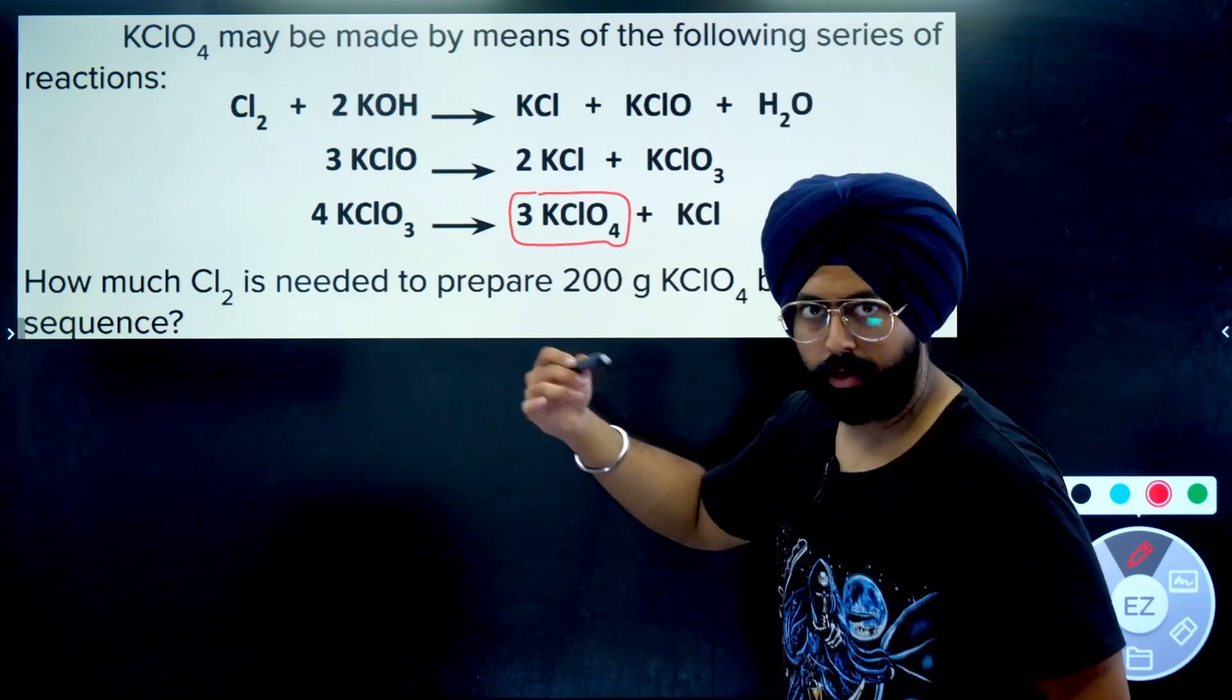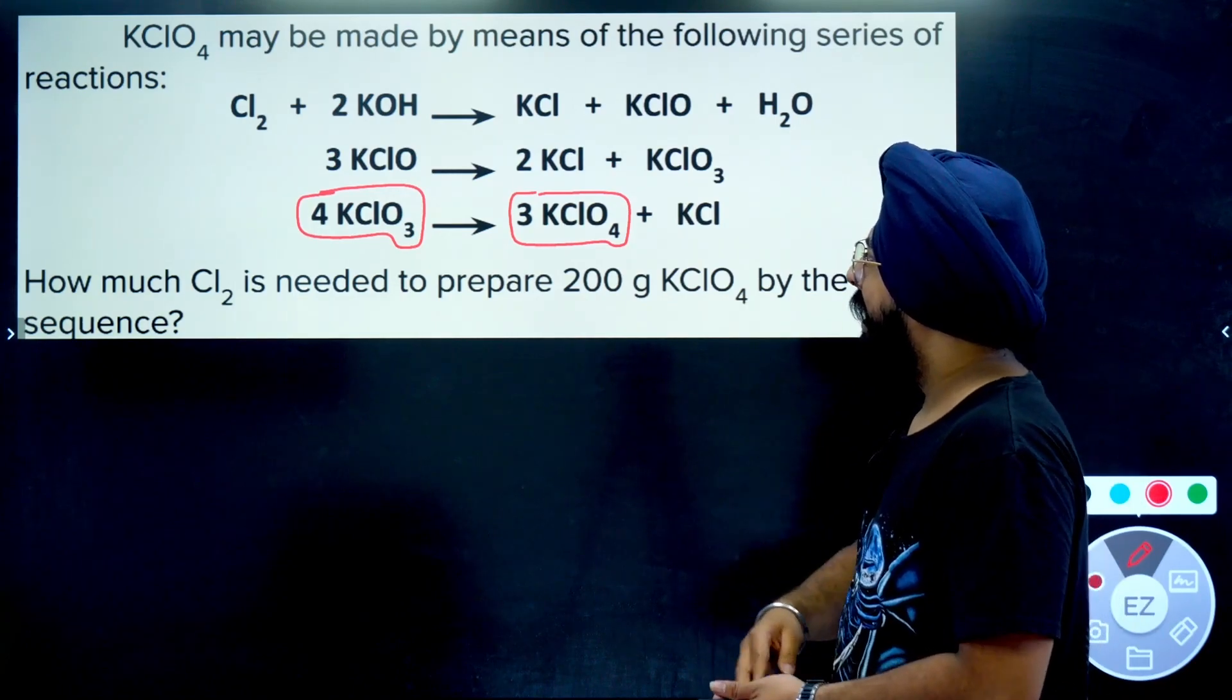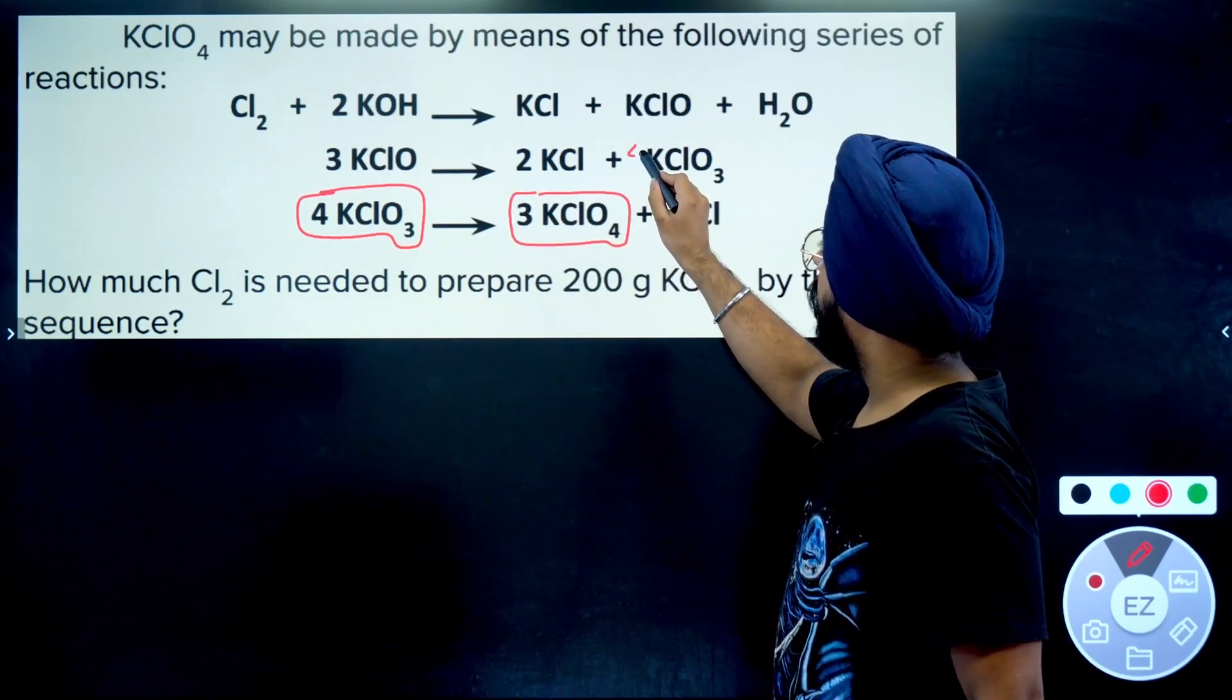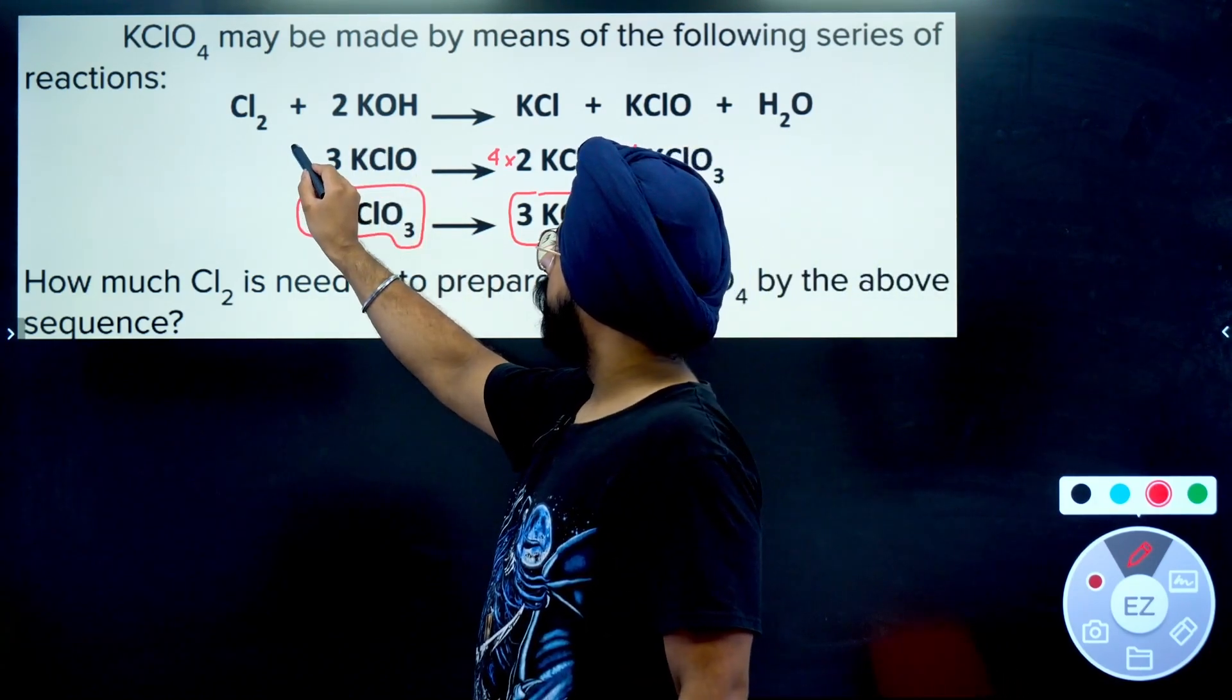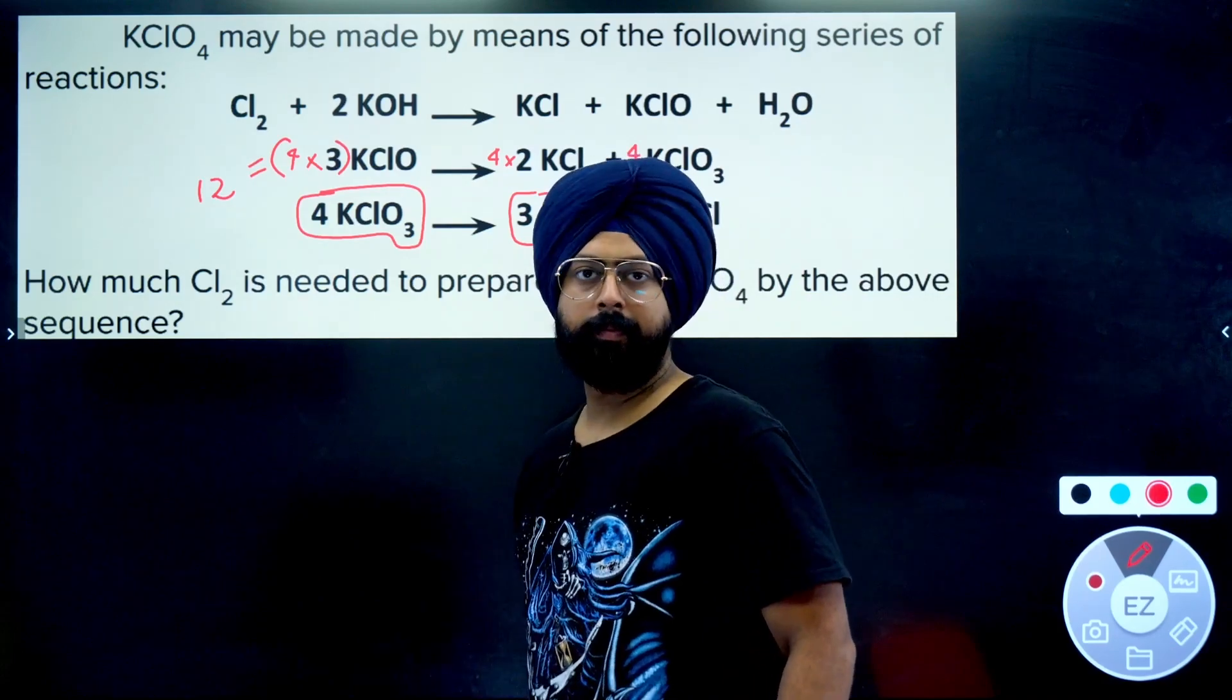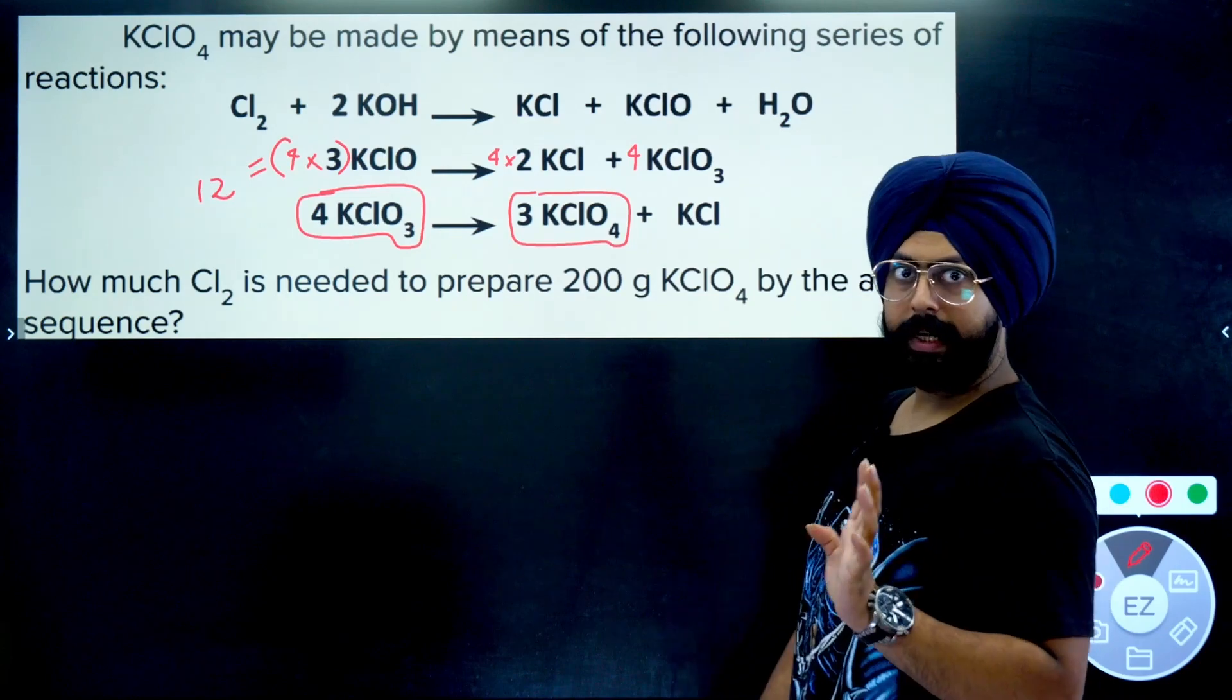All of this KClO₃ is coming from the second reaction. So in order to produce 4 moles of KClO₃ from the second reaction, let me multiply the entire second reaction with the number 4. So 3KClO₄ becomes 4 times that, which gives 12KClO. This will become 4 times 2 KCl, that's 8KCl. And 4 times 3 is 12KClO.